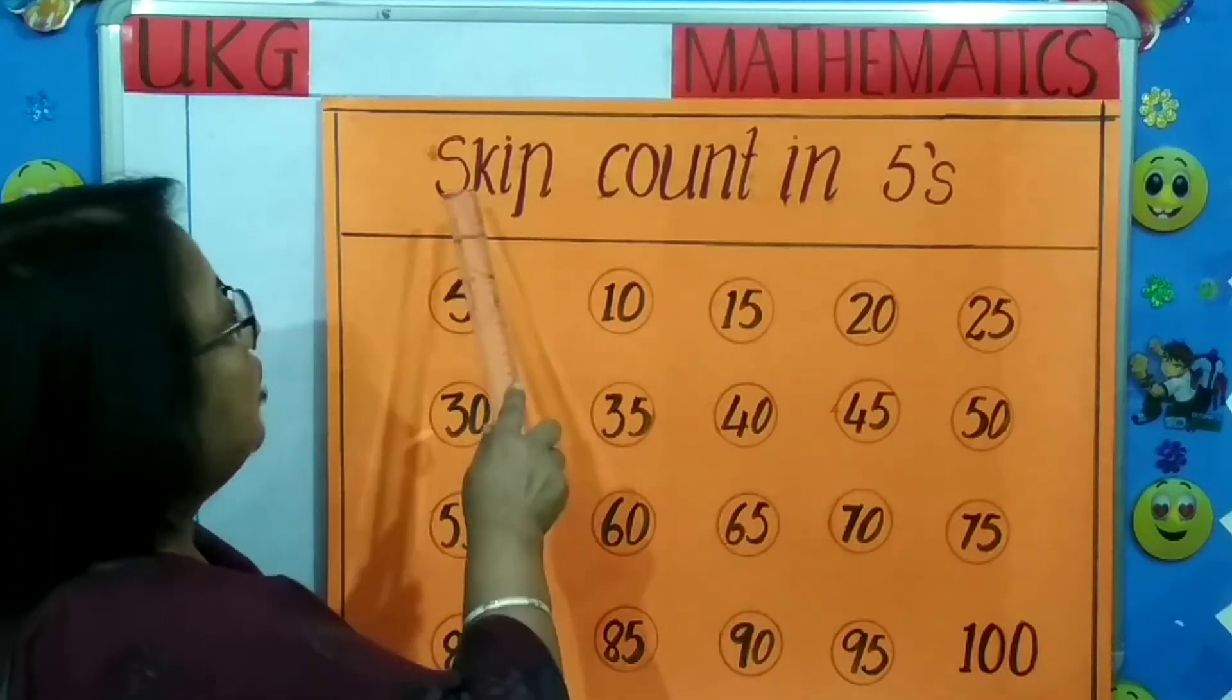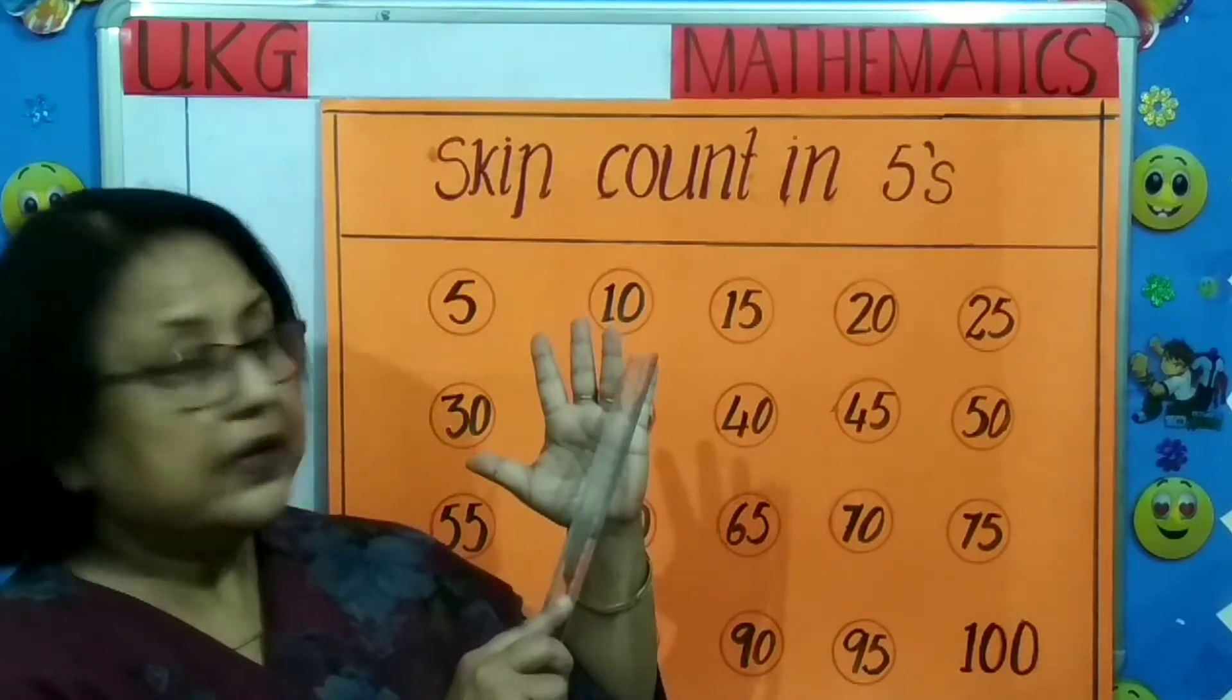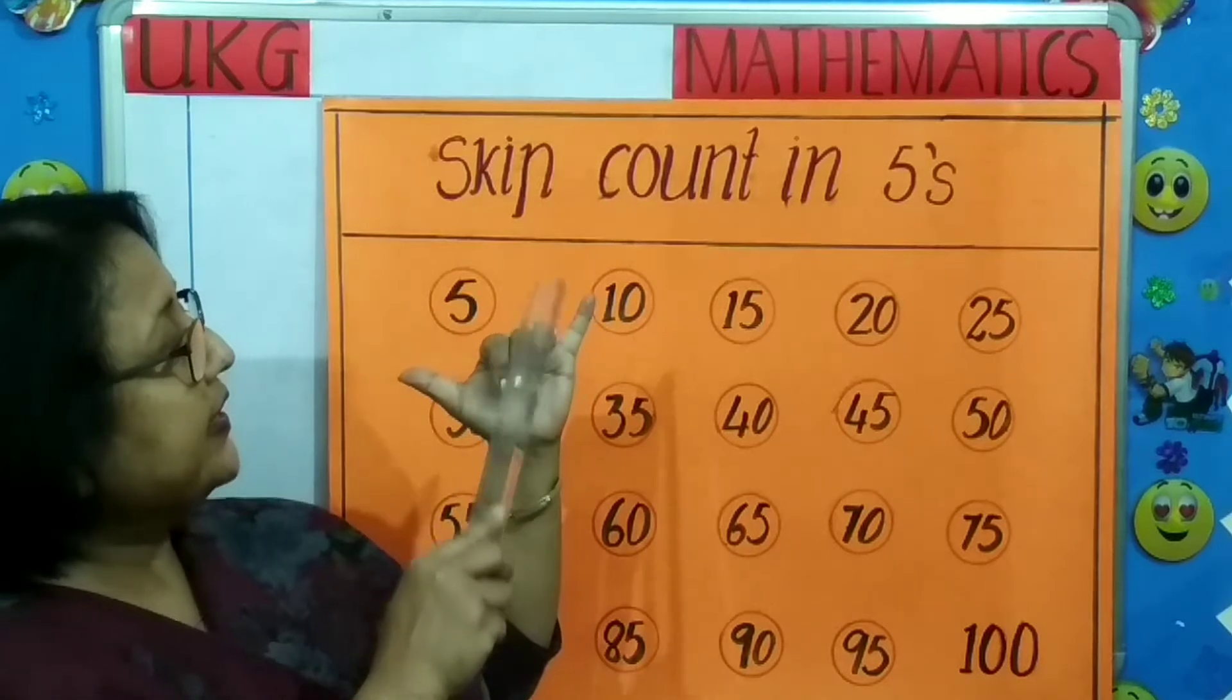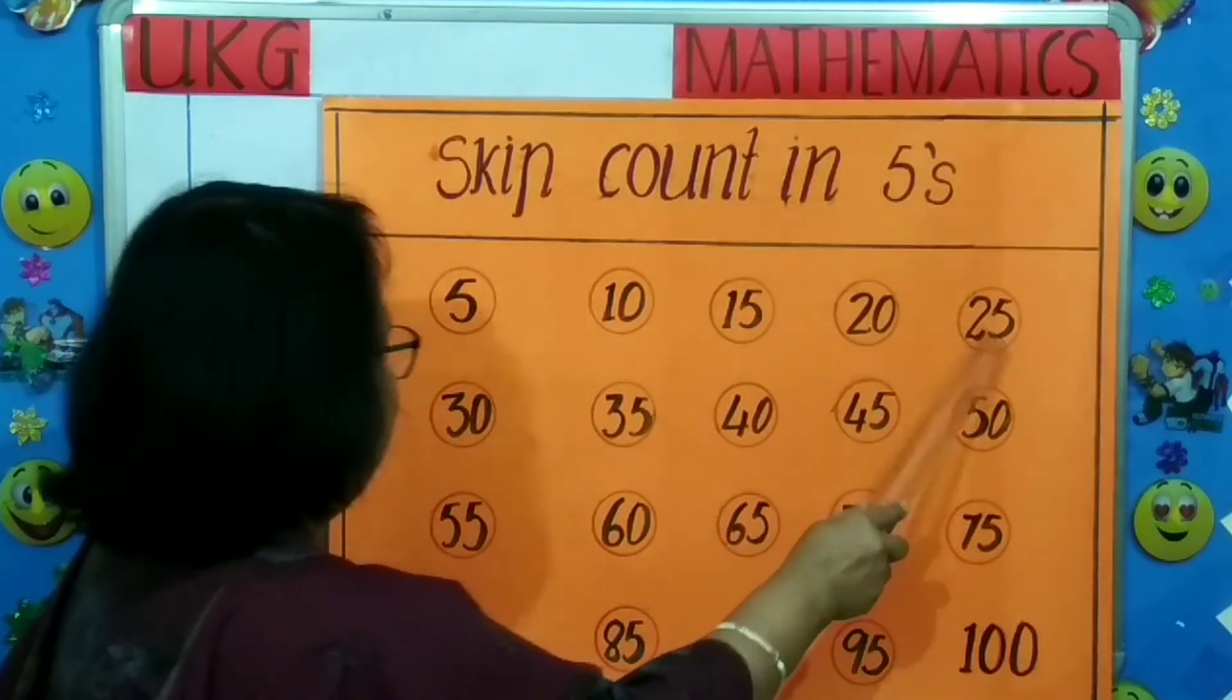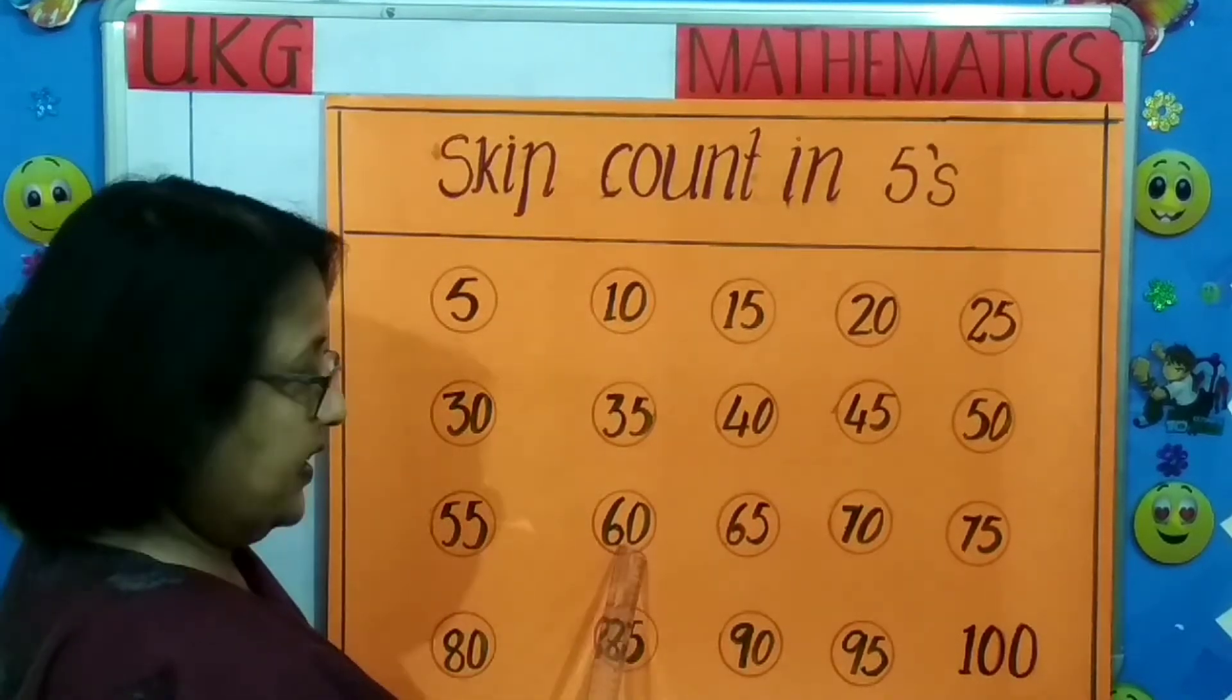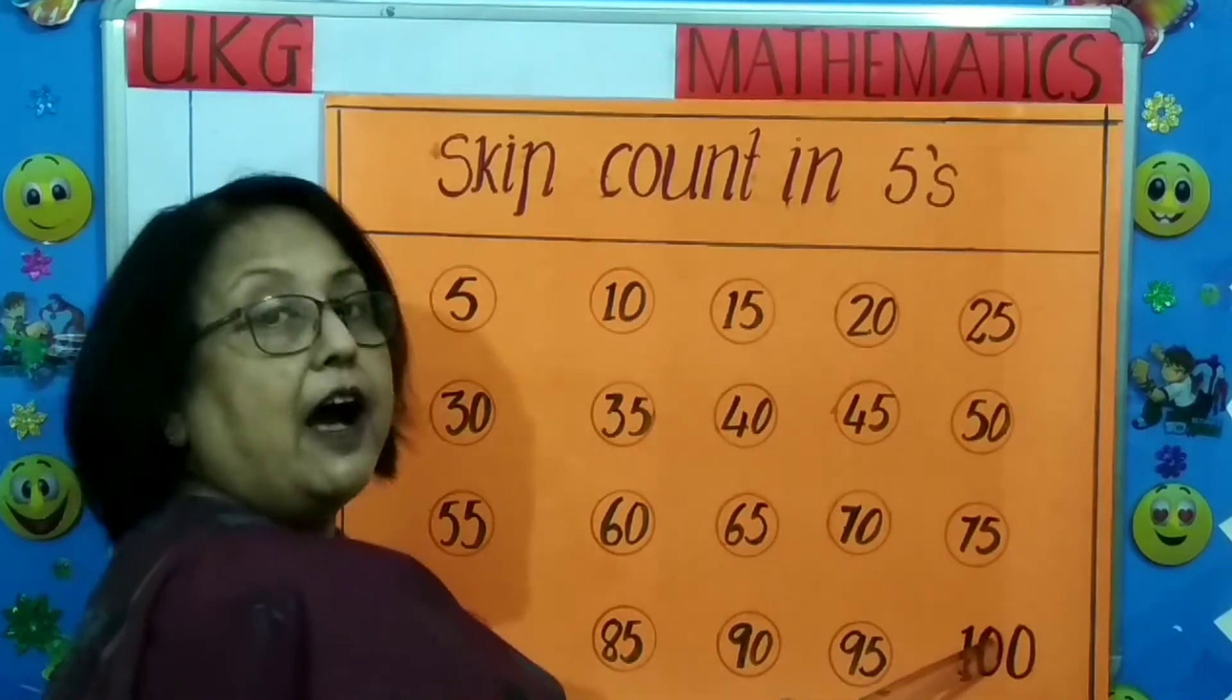Now moving on to the next topic, skip count in fives. What is skip count in fives? We have to count the first 4 numbers and the 5th number is written. So look 5, then 6, 7, 8, 9, 10, then 50, 20, 25, 30, 35, 40, 45, 50, 55, 60, 65, 70, 75, 80, 85, 90, 95, 100.